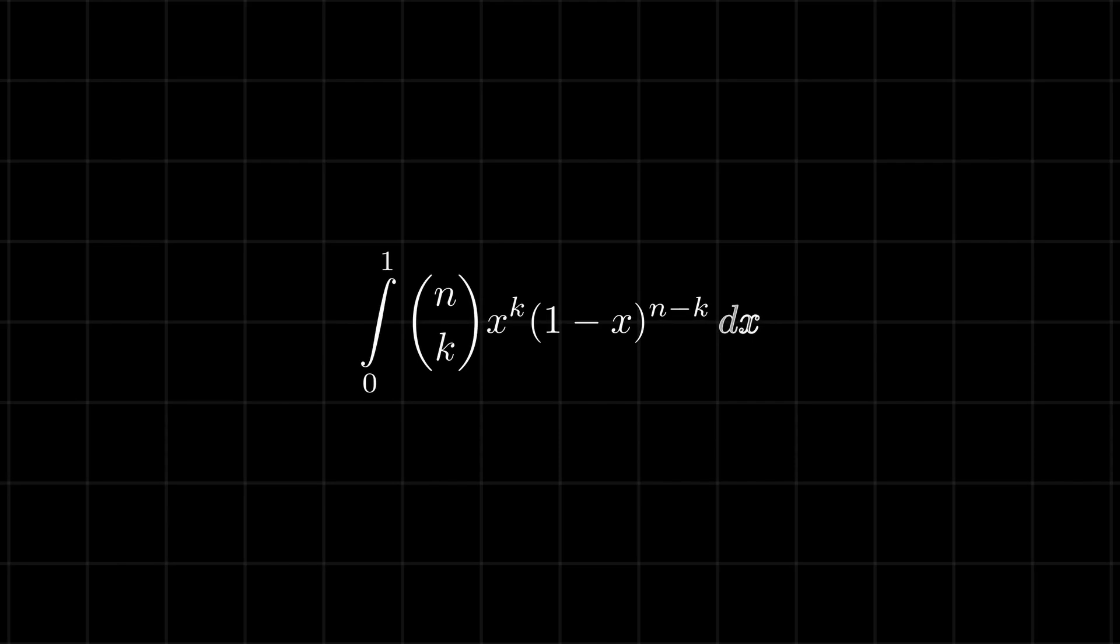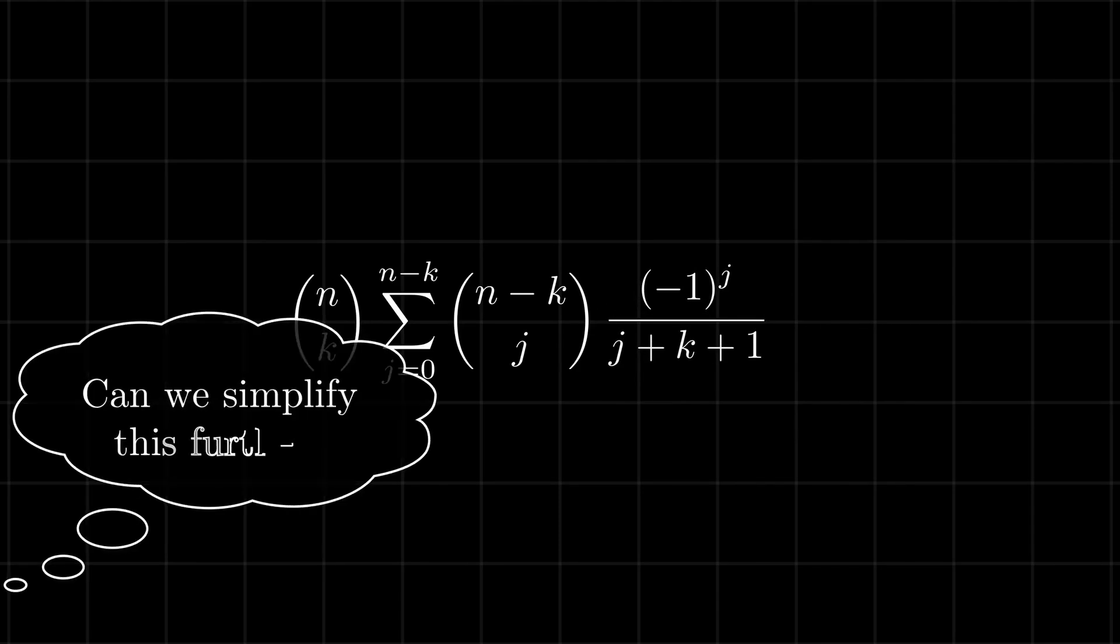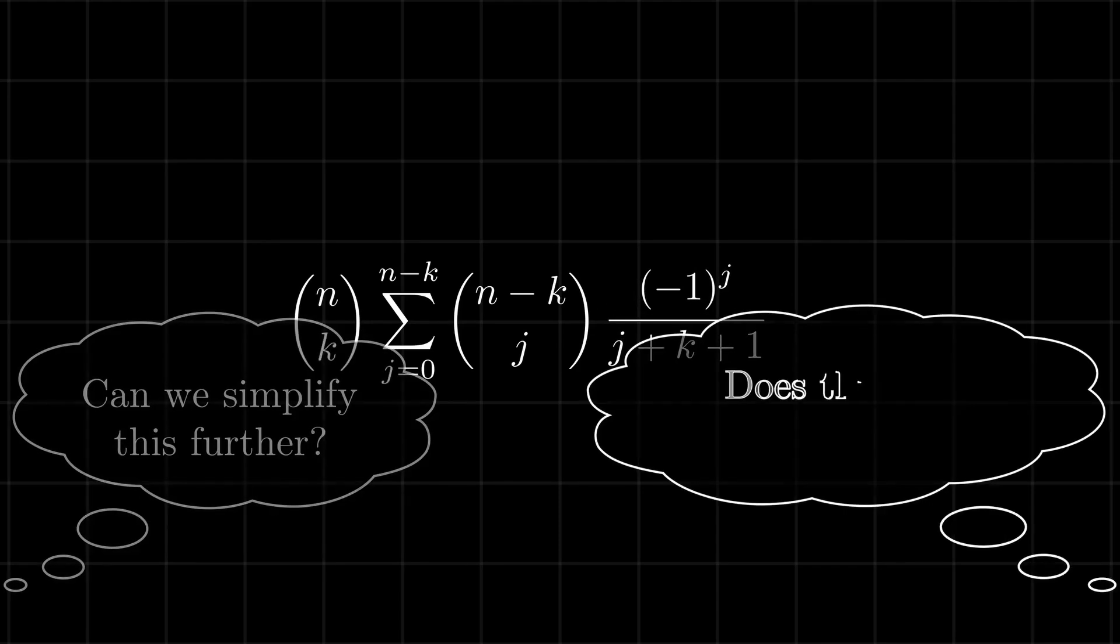To begin with, this integral does not seem too hard. We can expand the term using the binomial theorem, multiply everything by x power k and integrate the result term by term. Sure, this will solve the problem, but unfortunately it does not give a very good intuition on why the result is true.